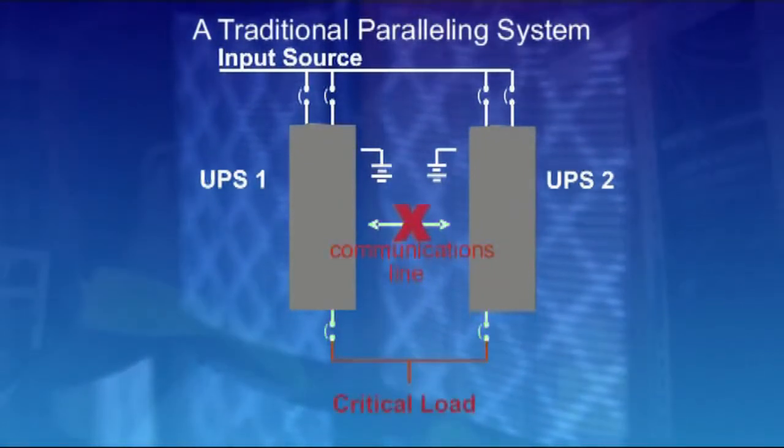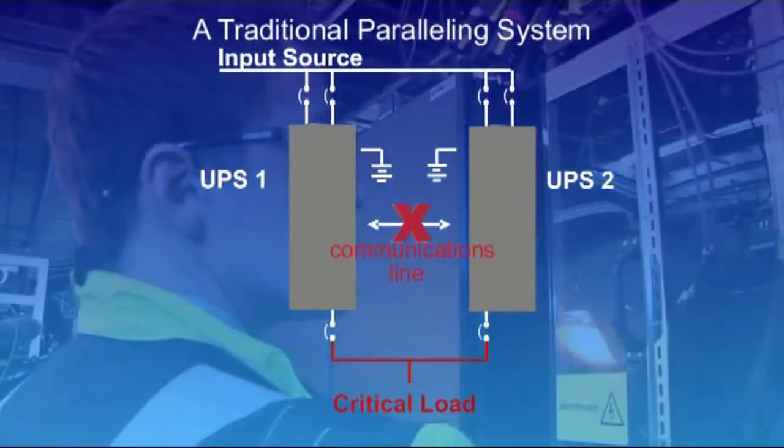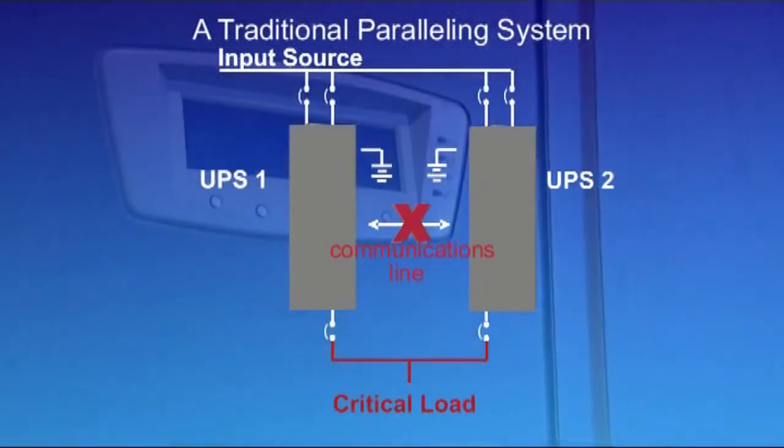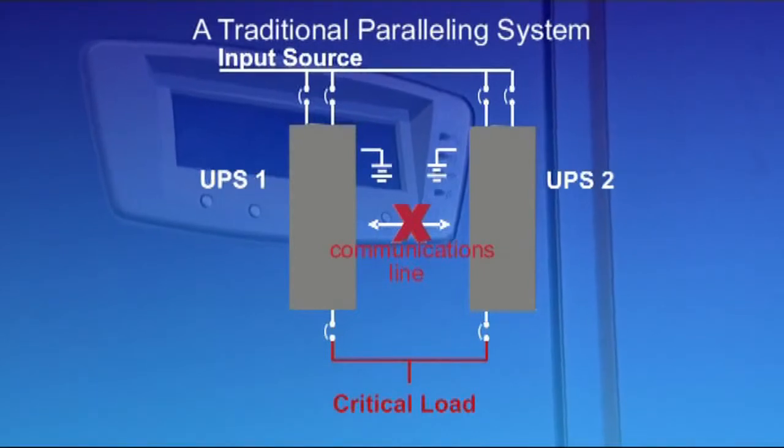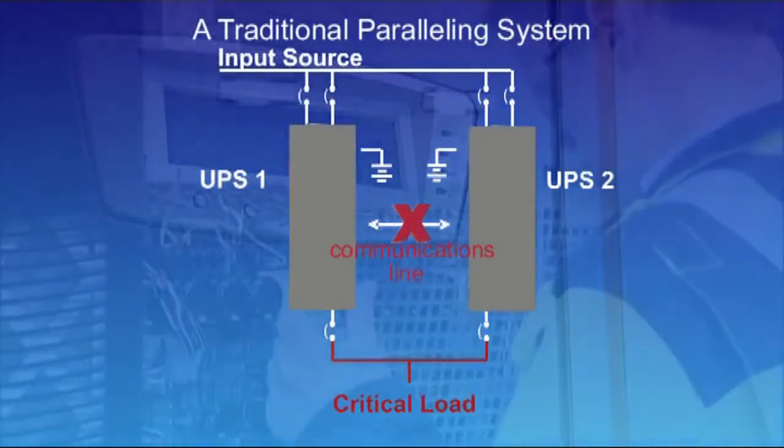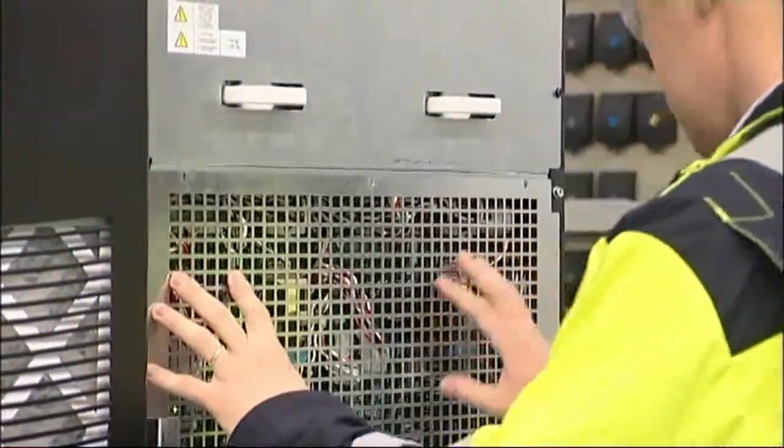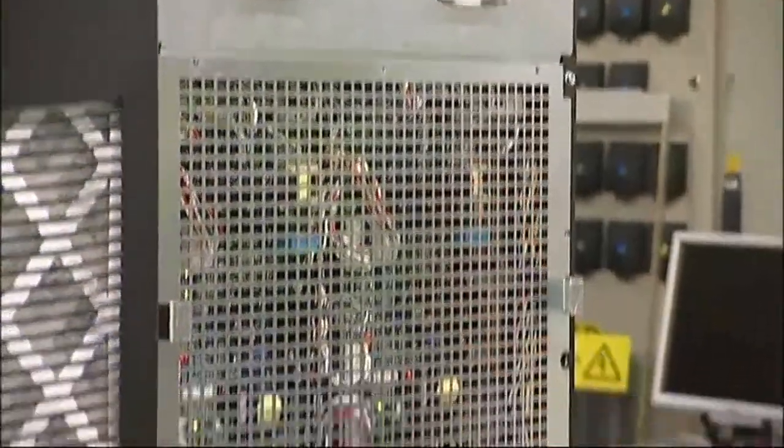In the case of a signal being lost, UPS outputs lose their synchronization, which drives the modules to an imbalanced load share. In this case, a single point of failure in most cases ultimately causes an unwanted system shutdown and potential downtime to critical load.